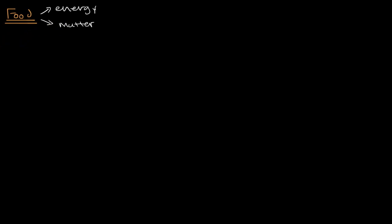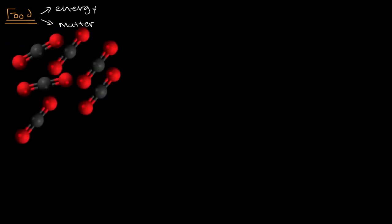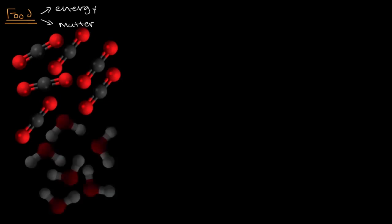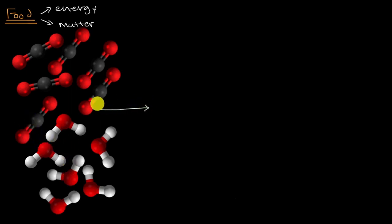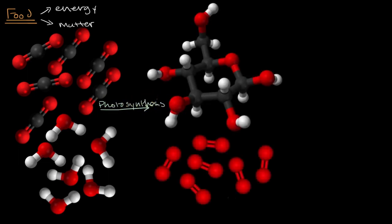The answer, which you might already realize, is that the tree can make its own food through photosynthesis. You have carbon dioxide in the air and water, in the presence of energy in the form of sunlight. Through the process of photosynthesis, this produces glucose and molecular oxygen as a byproduct. You can count the various carbons in dark gray, oxygens in red, and hydrogens.